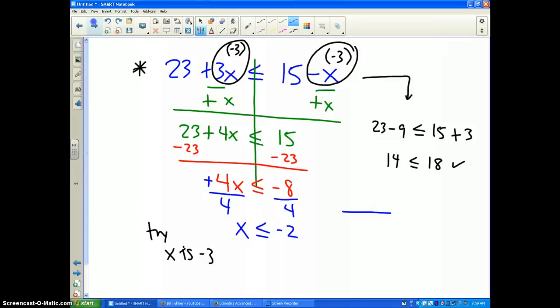Hopefully your graph looks something like this. You have a number line and the key number is negative 2. It says less than or equal to, so we're going to draw a filled in dot at negative 2, and then our squiggly line should go to the left. That is how you solve linear inequalities.